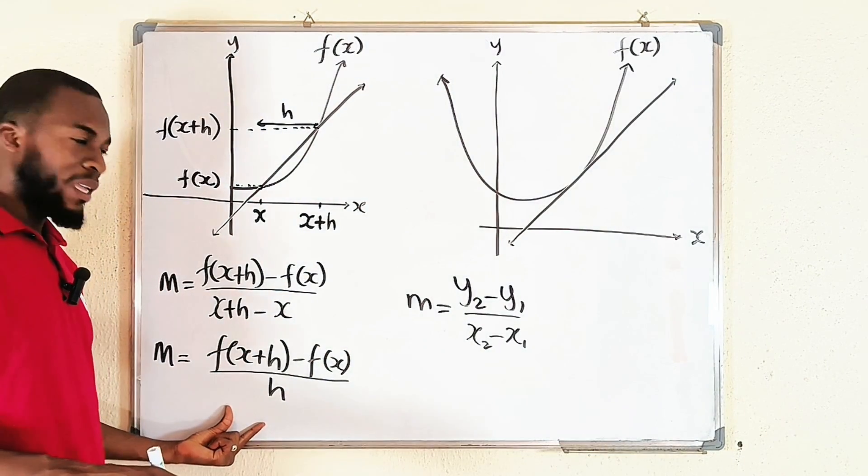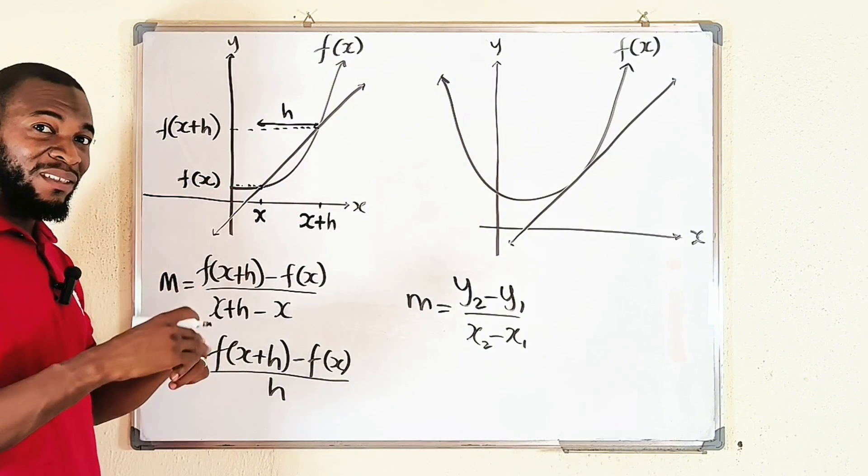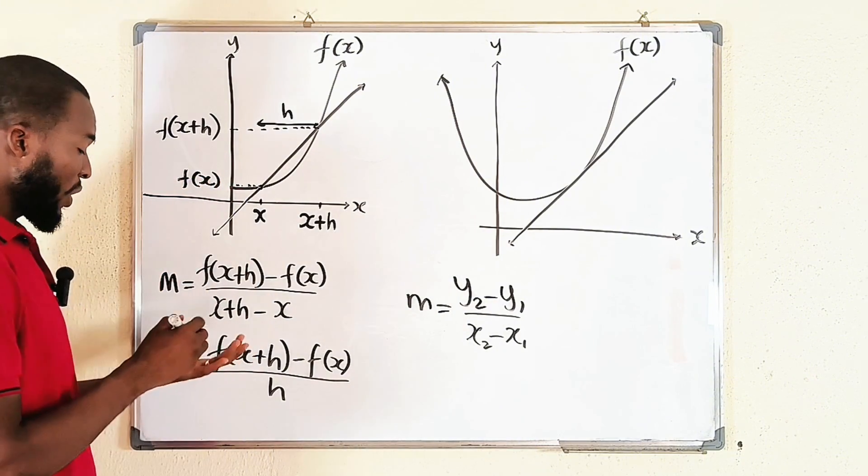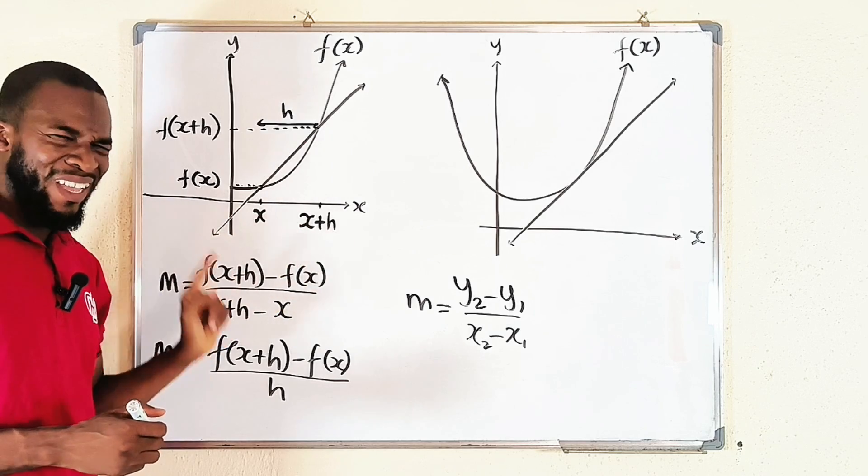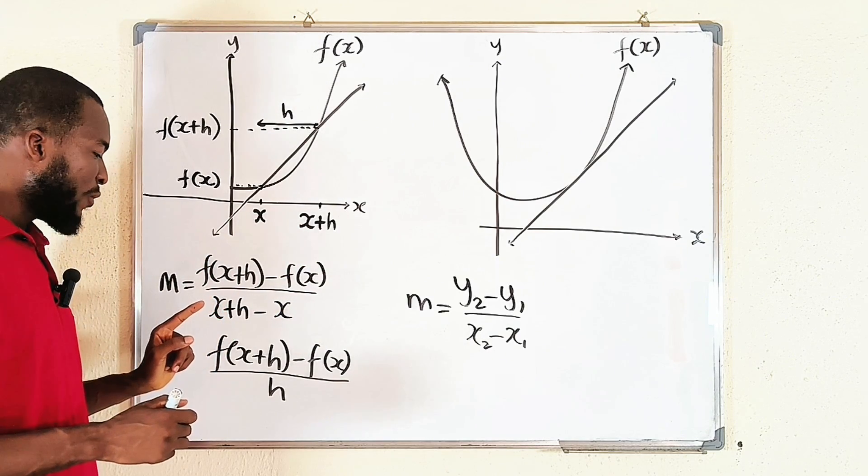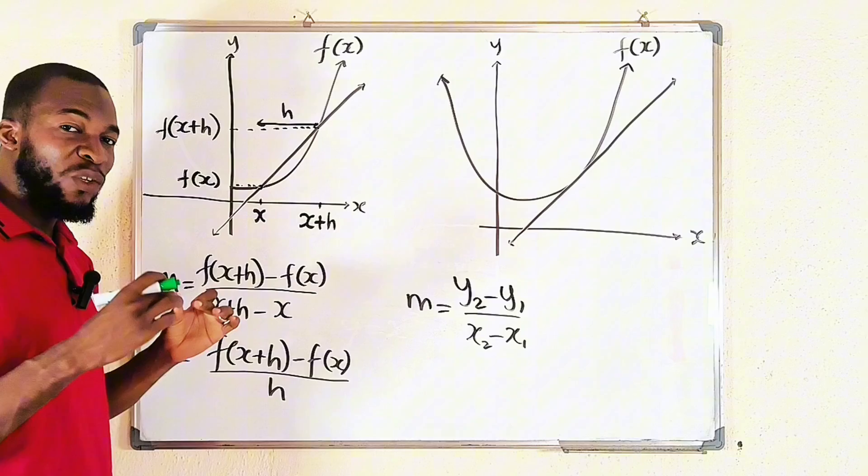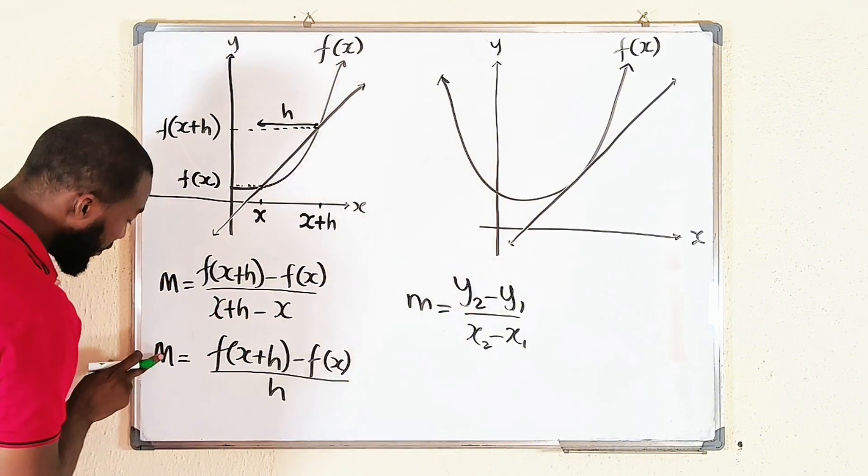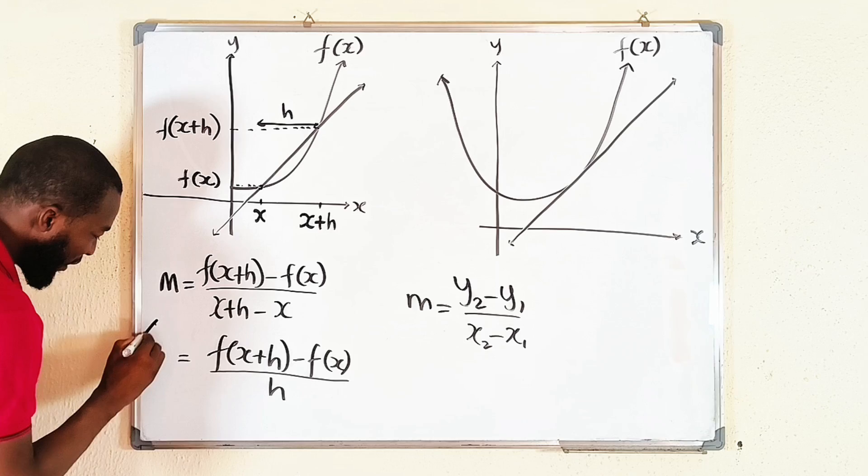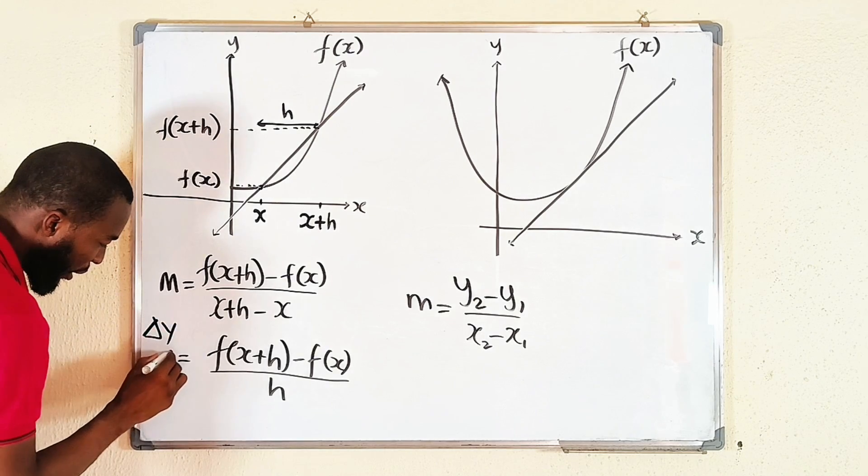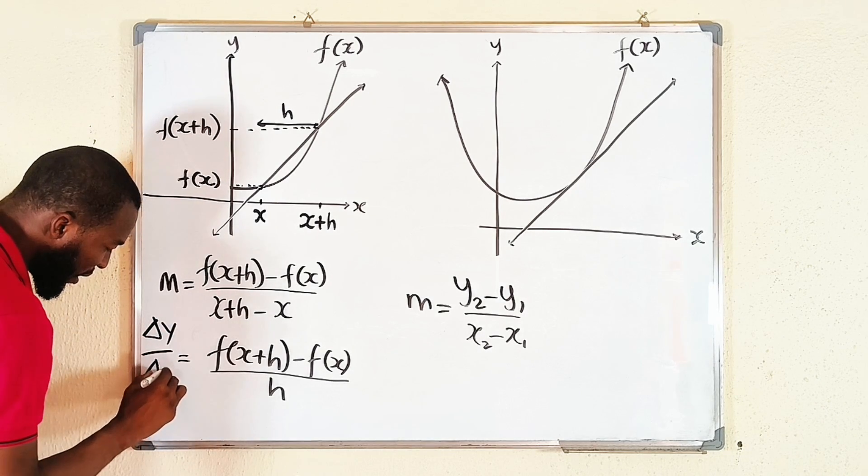So the slope, that is the average rate of change of the curve from x to x plus h. And you can also call it dy over dx. Instead of using m, you can say this is the change in y divided by the change in x.